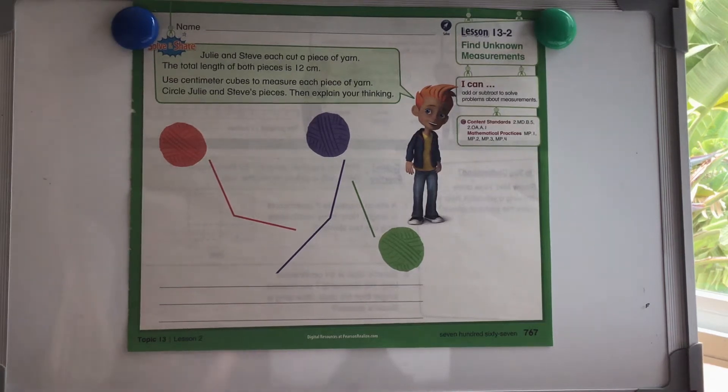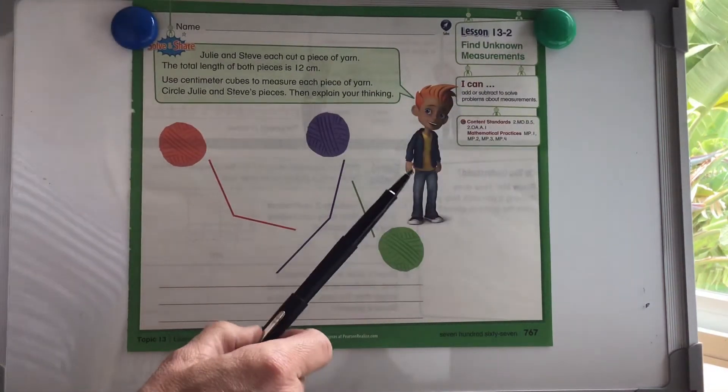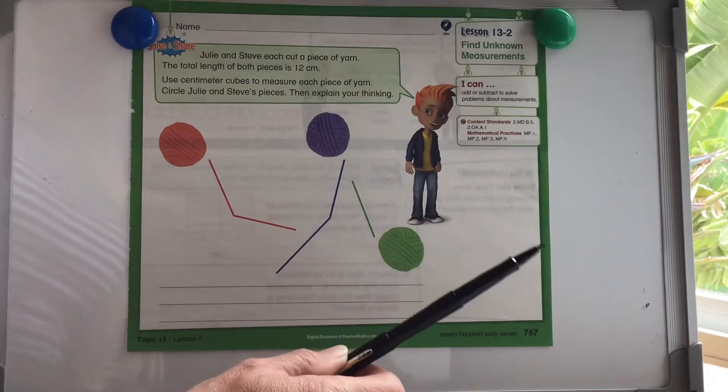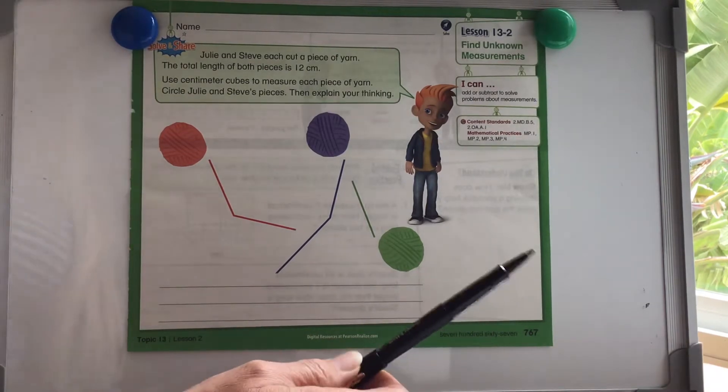All right, this is second grade math lesson 13-2, and we're going to be finding unknown measurements. So kind of a math mystery. It should be pretty fun.